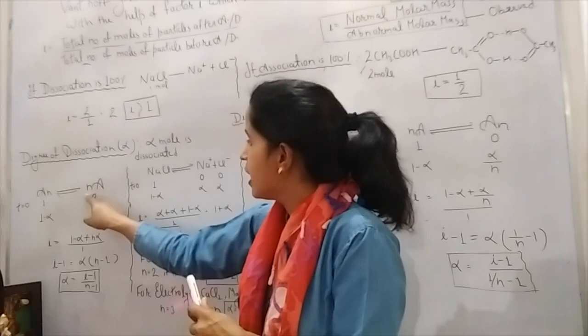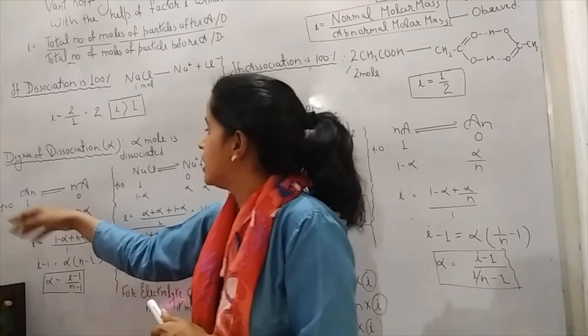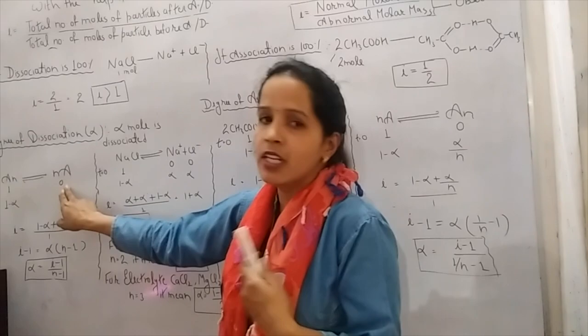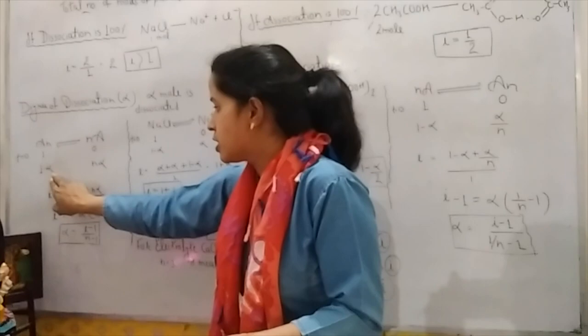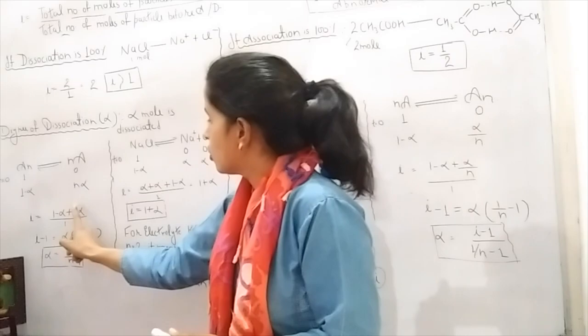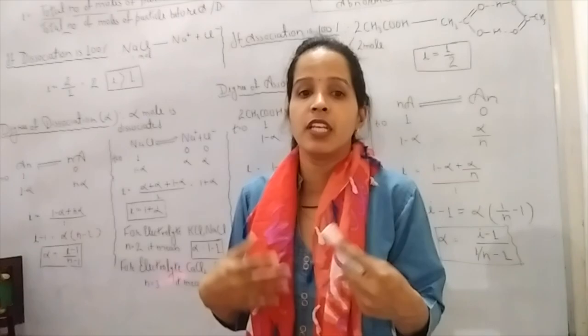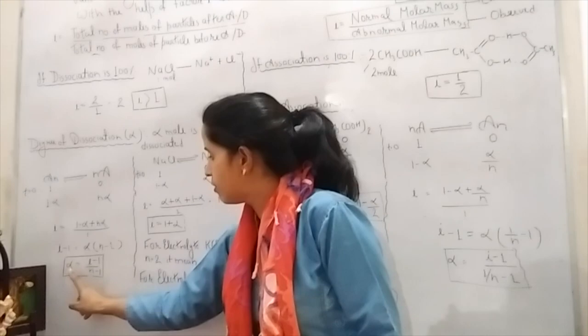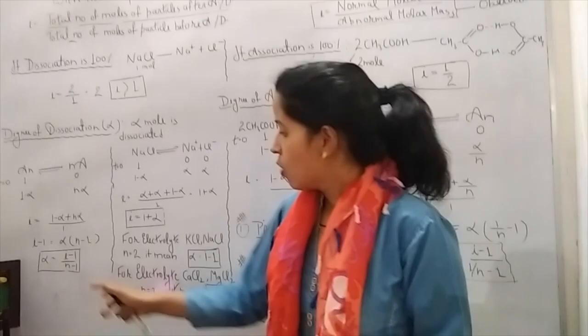We have taken An, which is not completely dissociating to give nA. We have taken one mole of An. At time T=0, one mole is present and dissociation has not started. When some time has passed, alpha moles dissociate, giving N×alpha products. So i = (1 − α + Nα) / 1. Solving this equation gives us the relationship: α = (i − 1) / (N − 1).